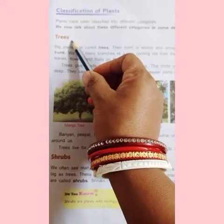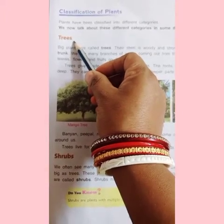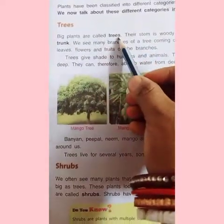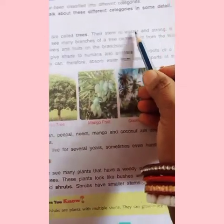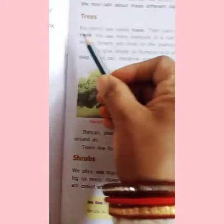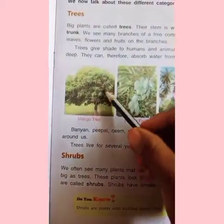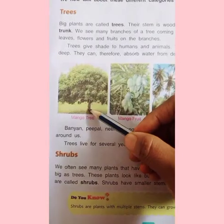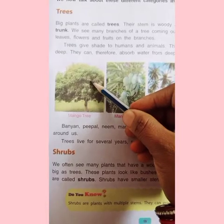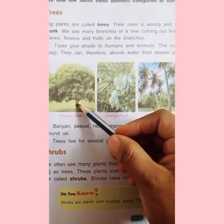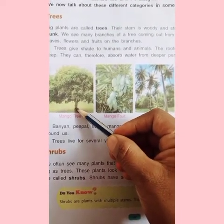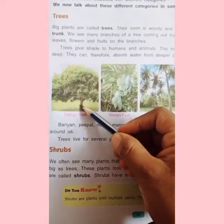Firstly, we are going to see trees. Big plants are called trees — bade plants ko trees bolte hai. Their stem is woody and strong; it is called the trunk. Look here — yeh big plant hai, this is the woody stem, very strong, and this is called the trunk.